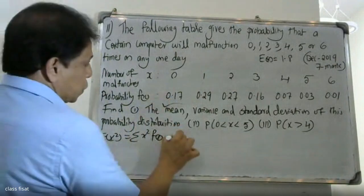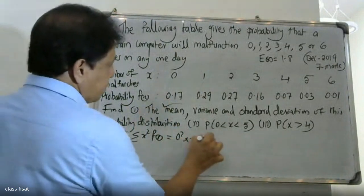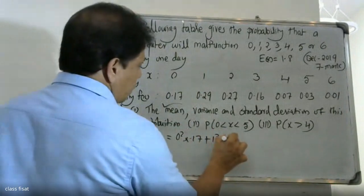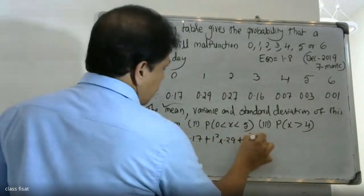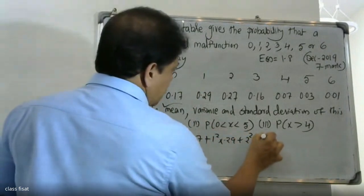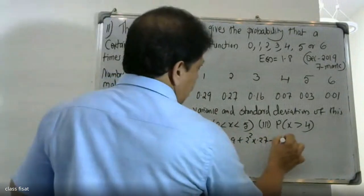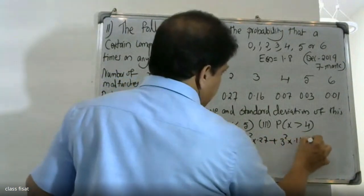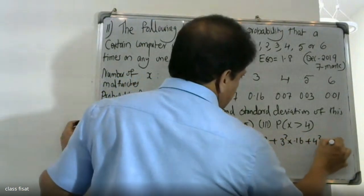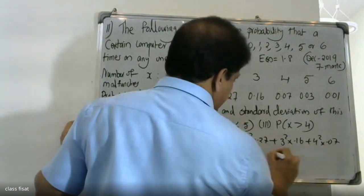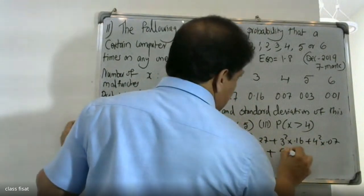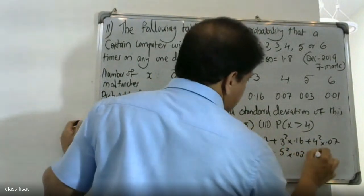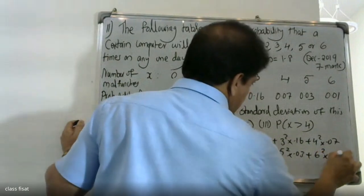Now computing the variance. First, E(X²) = Σ x²·f(x): 0 into 0.17 plus 1 squared into 0.29 plus 2 squared into 0.27 plus 3 squared into 0.16 plus 4 squared into 0.07 plus 5 squared into 0.03 plus 6 squared into 0.01.